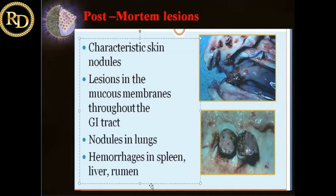Post-mortem lesions included nodules and mucous membrane lesions found throughout the GIT. There were nodules in the lungs, hemorrhages in the spleen, liver, and the whole viscera was affected. The skin nodule type lesions were found throughout the viscera, and in whichever animal died, the whole GIT and viscera invariably showed the presence of these lesions.